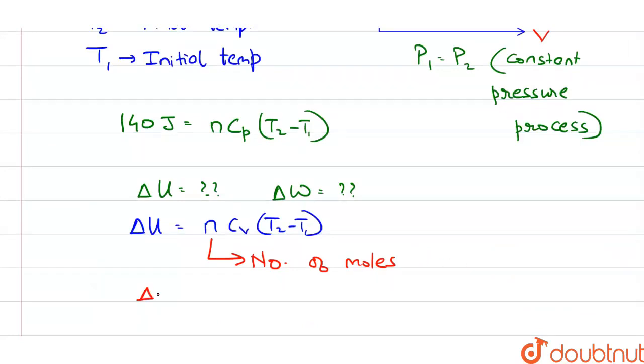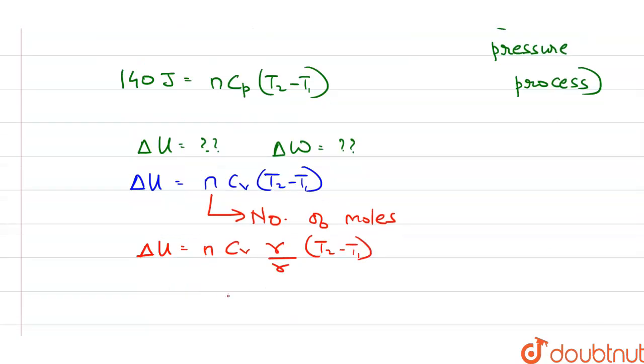Now if we multiply and divide by gamma, we get N Cv times gamma upon gamma into T2 minus T1. Delta U is equal to N into...